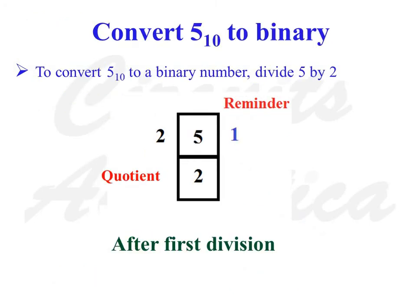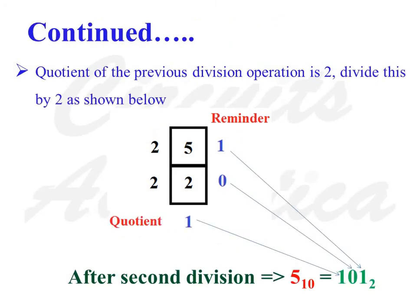Convert 5 to a binary number. To convert 5 to binary, divide 5 by 2. We get 2 as the quotient and 1 as the remainder. As the quotient is not less than 2, we do the division again. When we divide 2 by 2, we get 1 as the quotient and 0 as the remainder. As the quotient is now less than 2, we have completed the conversion. So 5 in the decimal number system is equal to 101 in binary.